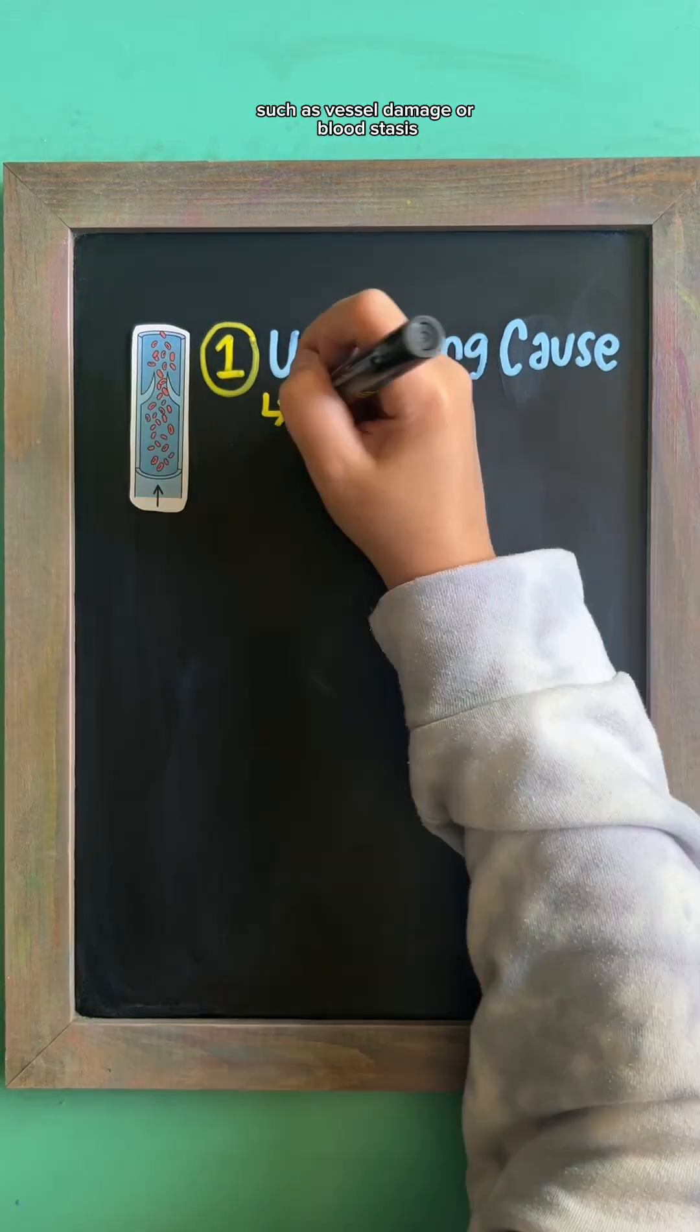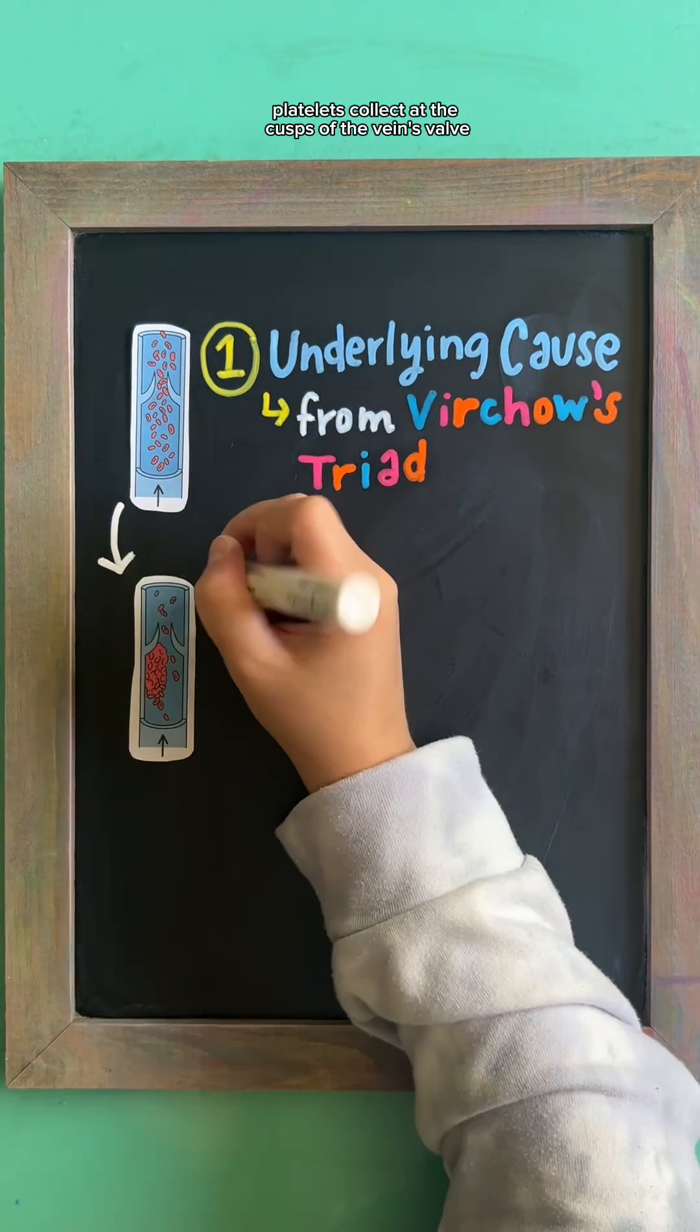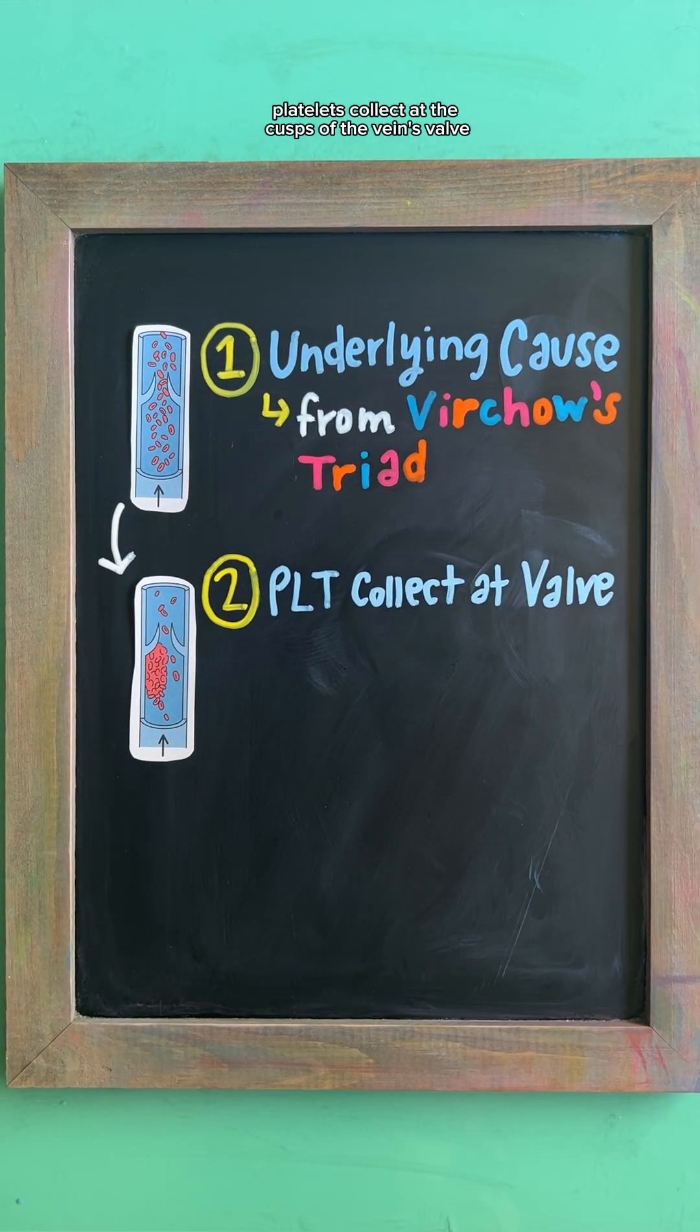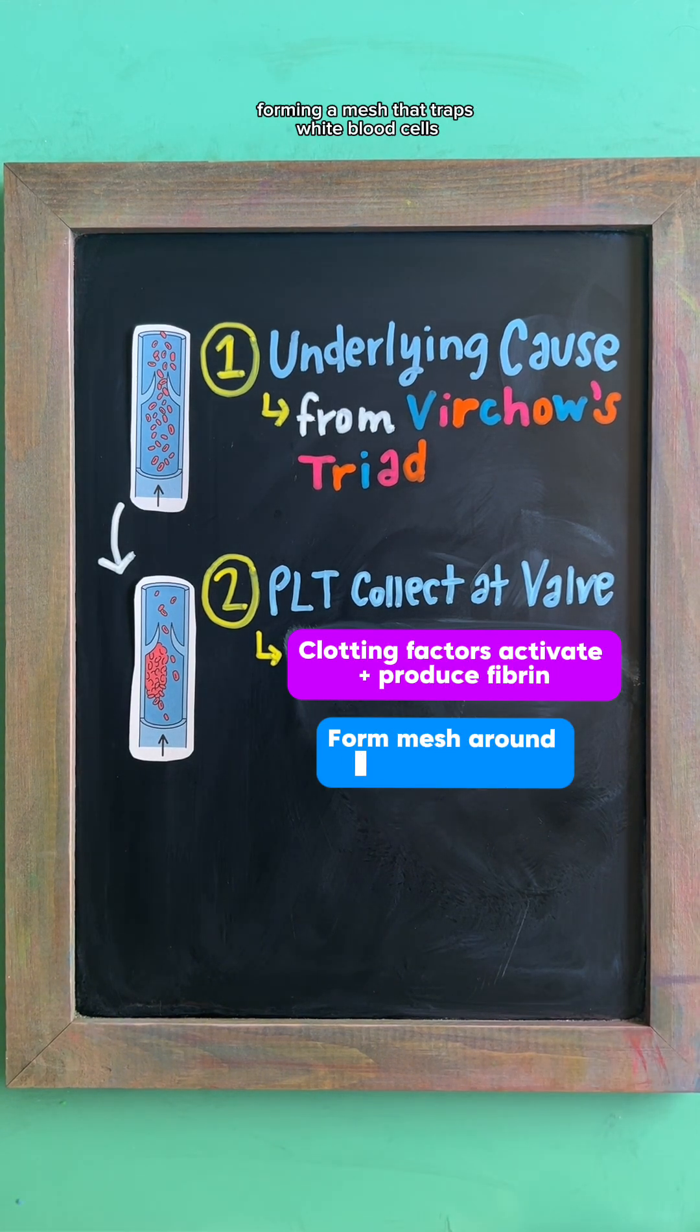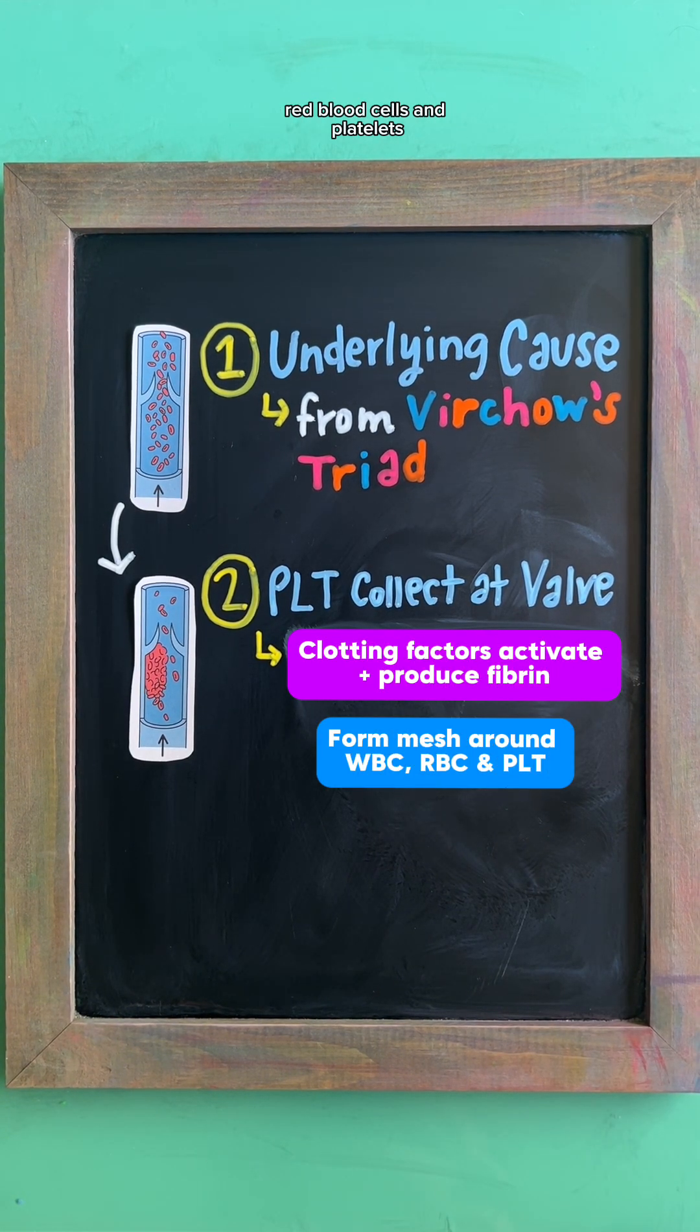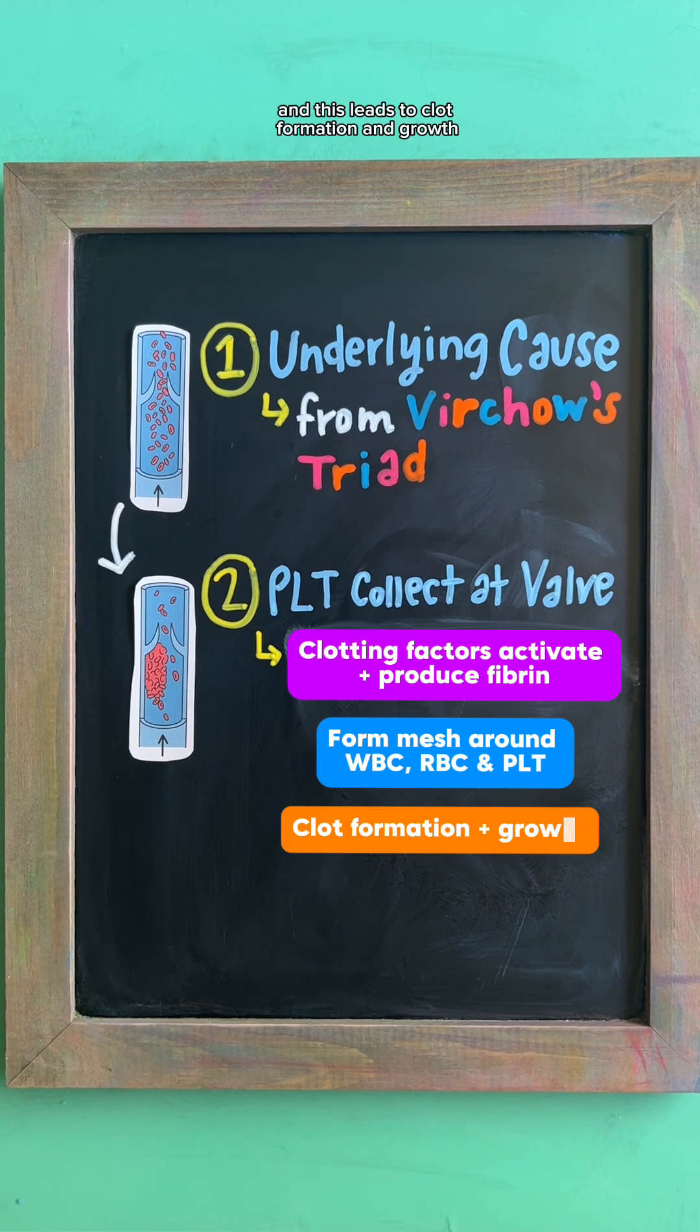Once an underlying cause occurs, such as vessel damage or blood stasis, platelets collect at the cusps of the vein's valve. Clotting factors then activate and produce fibrin, forming a mesh that traps white blood cells, red blood cells, and platelets. This leads to clot formation and growth.